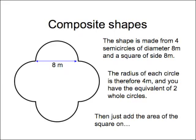The shape is made from four semicircles of diameter 8 meters, and a square of side 8 meters. The radius of each circle is therefore 4 meters, and you have the equivalent of two complete circles. Just add the area of the square on. Again, you might want to pause the video at this point to work out the sum yourself.